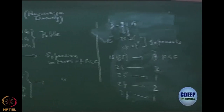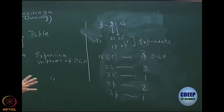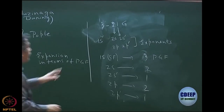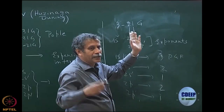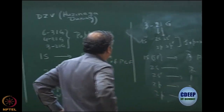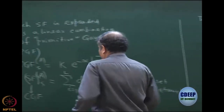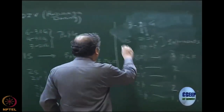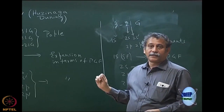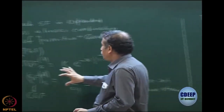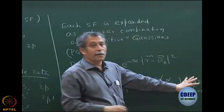Looking at these basis sets, Huzinaga-Dunning and Pople are pretty much the same — exponents differ, total number of primitives may differ, and you can keep changing them. 6-31G is typically good but people do use more primitives. Importantly, the numbers in 6-31G have nothing to do with the number of contracted functions. The number of contracted functions is decided by the number of entries, and these primitive counts are preset from atomic calculations.